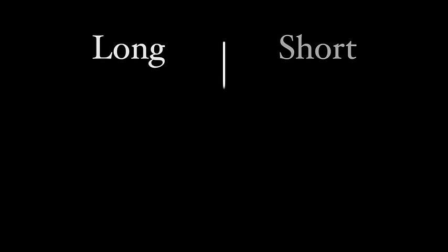Each vowel comes in long and short forms, and you'll be able to differentiate between these with the long mark called the macron, which is Greek for long, placed over the vowel.